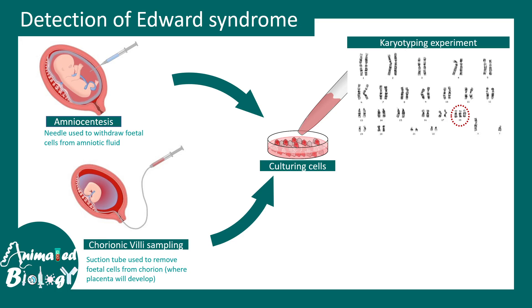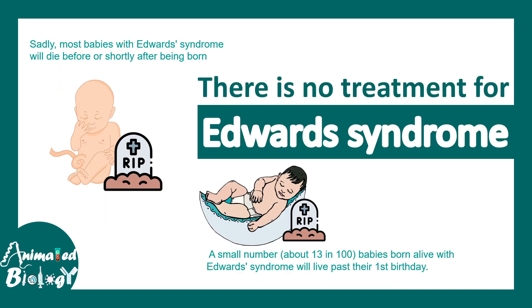Amniocentesis and chorionic villus sampling are always associated with a risk of miscarriage. There is currently no treatment for Edward syndrome. Most babies with Edward syndrome die before or shortly after birth, and those who survive rarely make it to their first birthday. Some mosaic cases are very rare survivors, but even they typically don't survive to adolescence. In the future, techniques like CRISPR-Cas9 gene editing may potentially treat or improve the lifestyle of these babies.